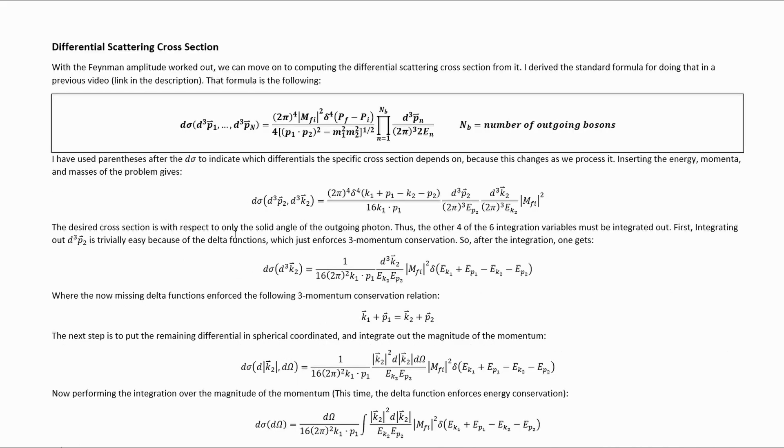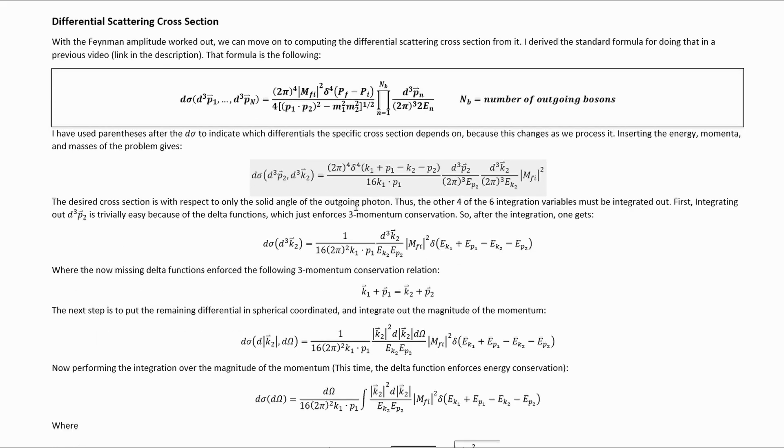The desired cross-section is with respect to only the solid angle of the outgoing photon, thus the other four of the six integration variables must be integrated over. Integrating over these variables is trivially easy because of the delta functions conserving three momentum. Doing those integrations leaves us with this formula and this three momentum conservation relation.